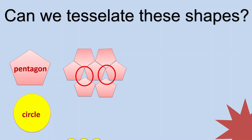How about the circle? Let's try to tessellate the circle. Do you see spaces also? Yes. So, we cannot tessellate the circle.